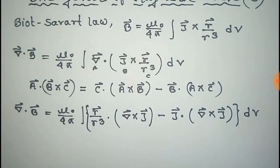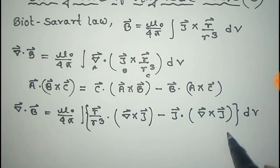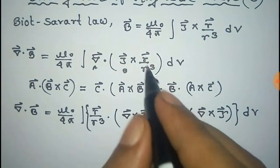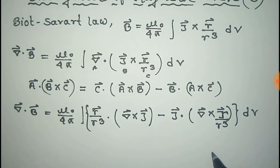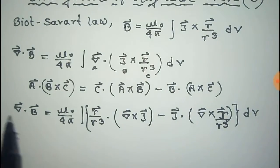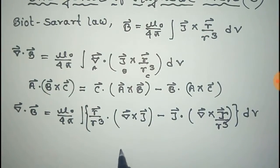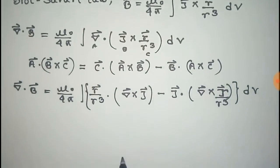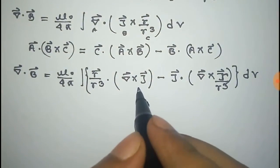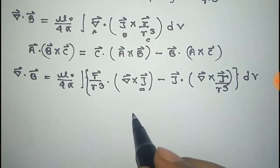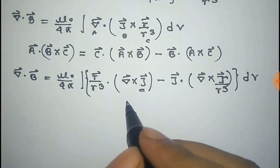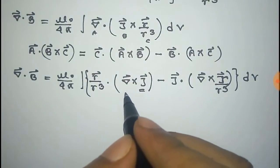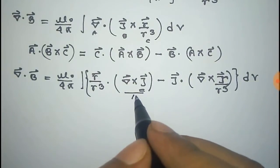There is a correction: j vector should be r vector by r cube because c is r vector by r cube. Now, j is the volume current density, and for steady current j is a constant vector. Therefore, the curl of j is zero.